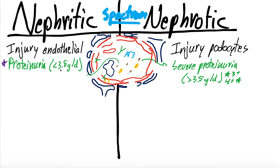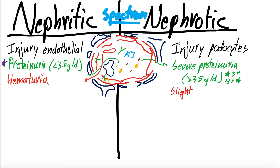You can get nephrotic-range proteinuria in nephritic syndrome. In nephritic syndrome, the endothelial lining is injured, so red blood cells will start to leak out and you will get hematuria — usually significant. In nephrotic syndrome, the podocytes are primarily damaged, so you still have some endothelial junctions and do not get as many red blood cells leaking out, but you can get very slight hematuria in nephrotic syndrome as well. Hematuria is also starred as part of the spectrum.